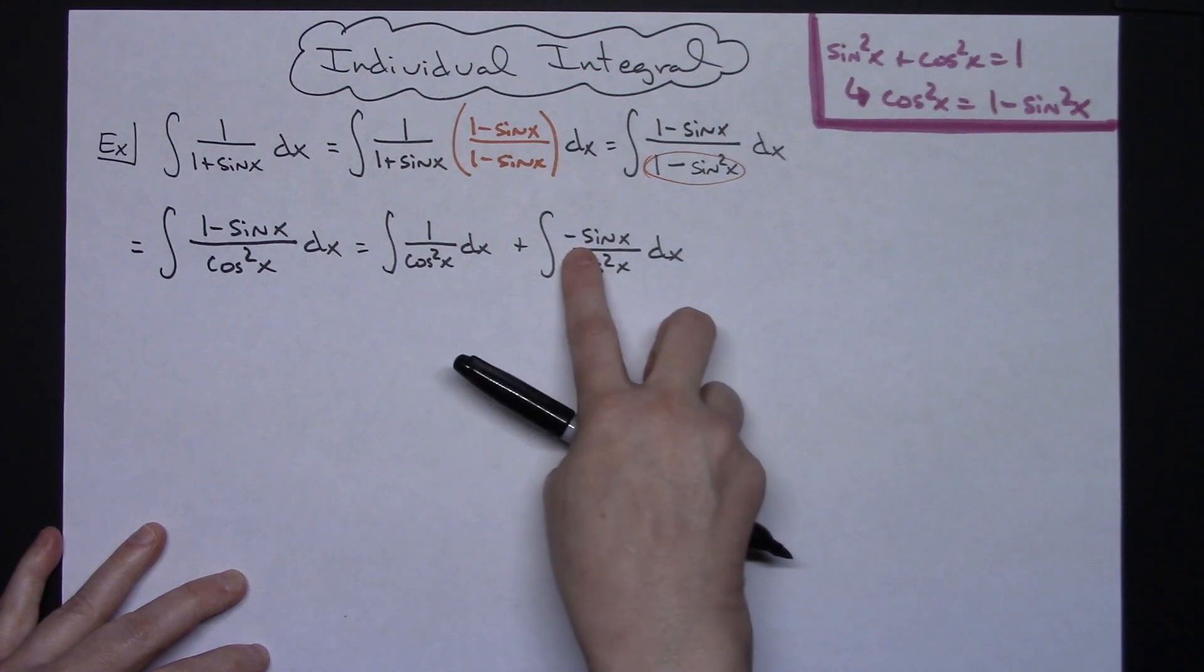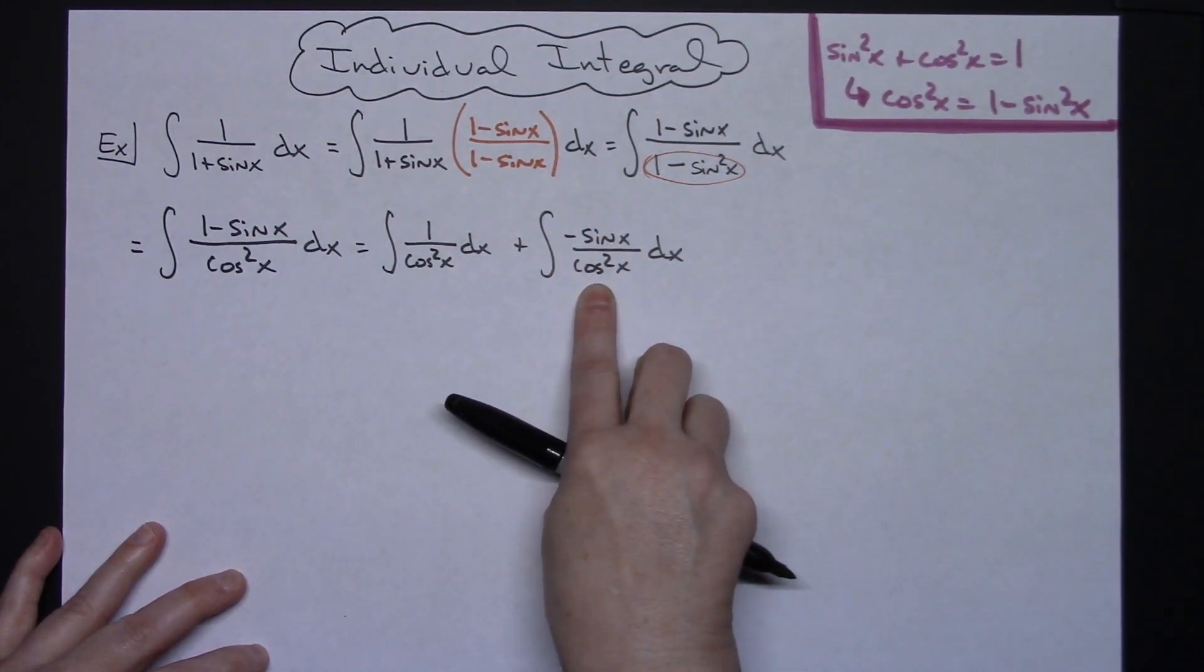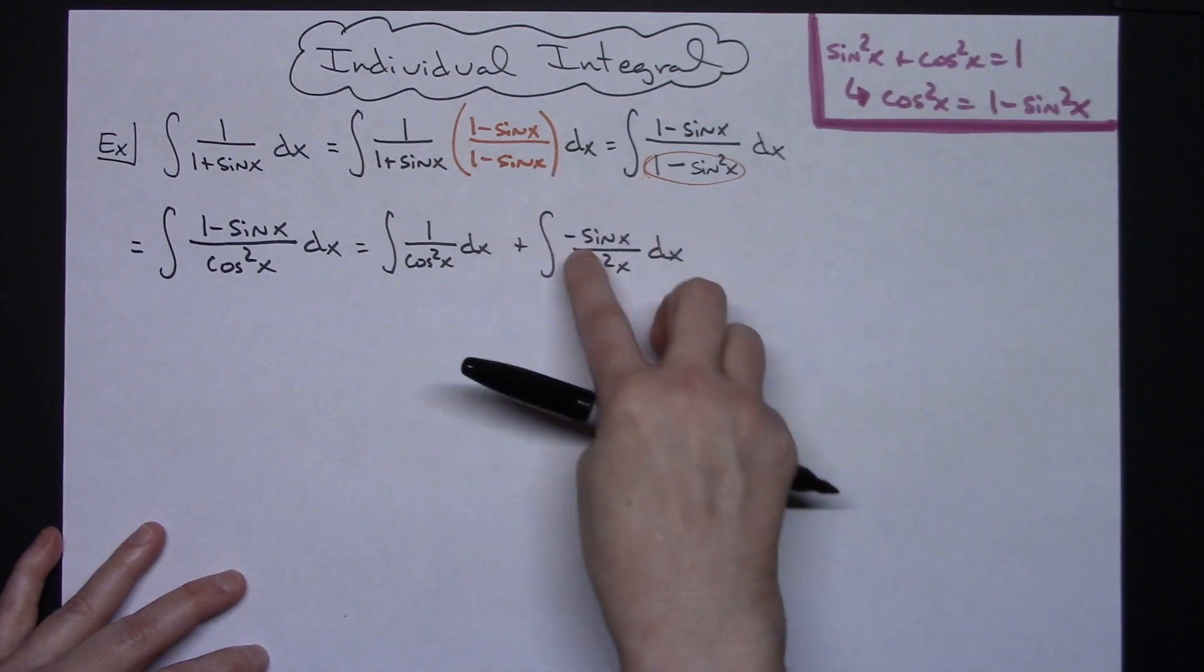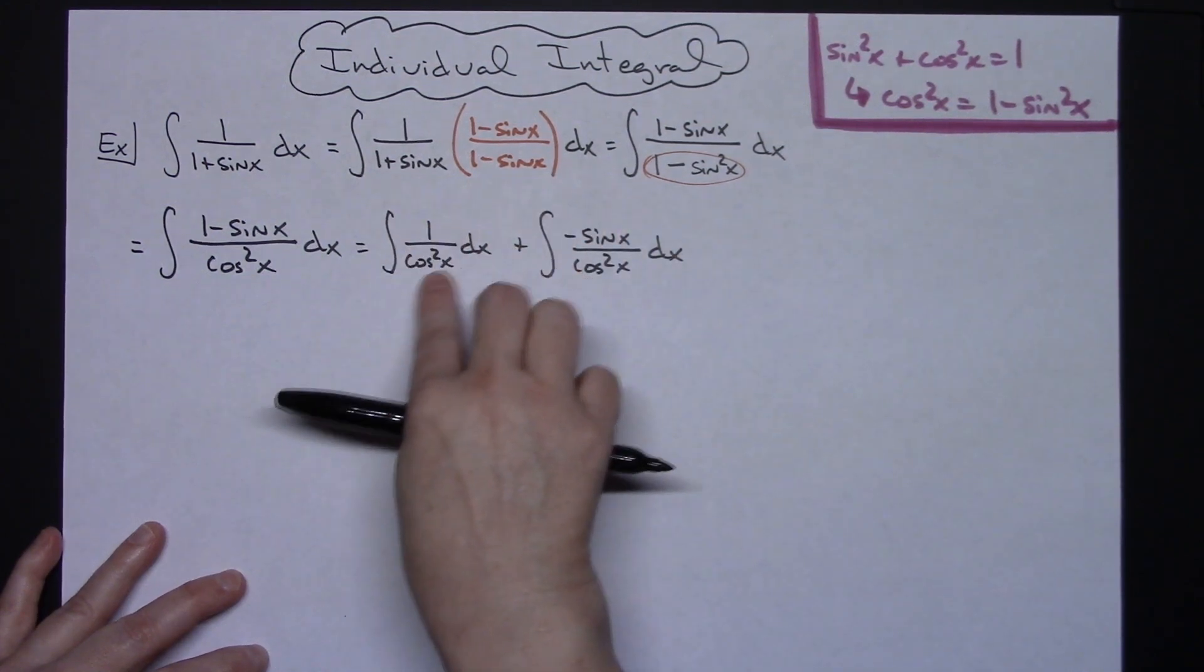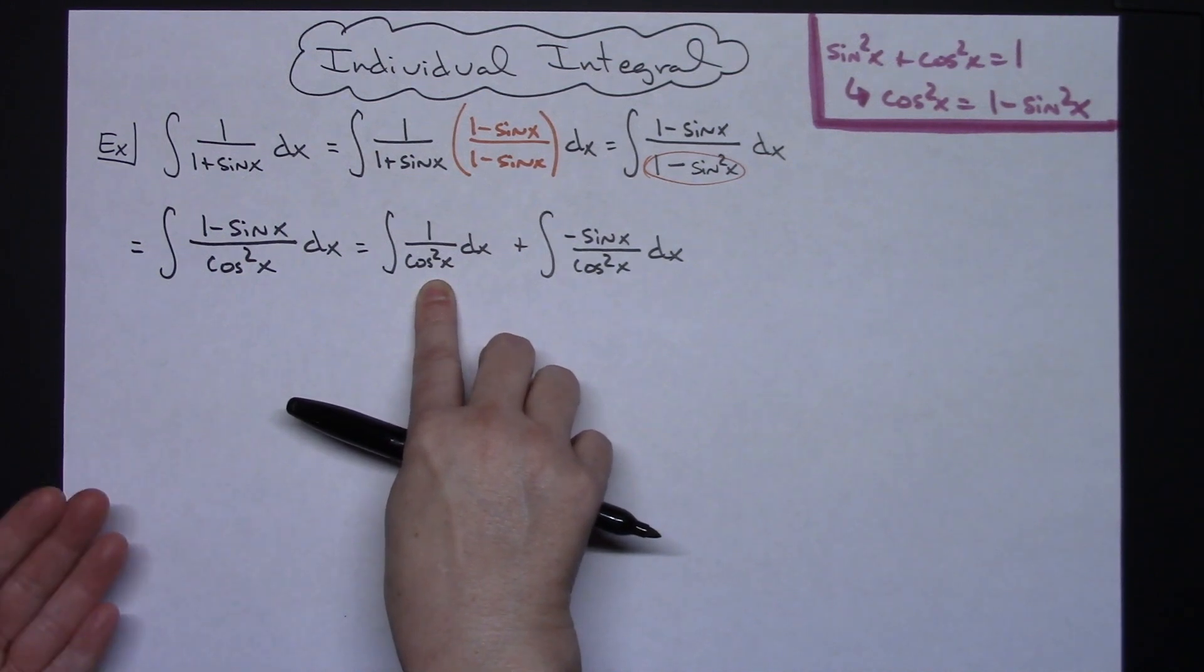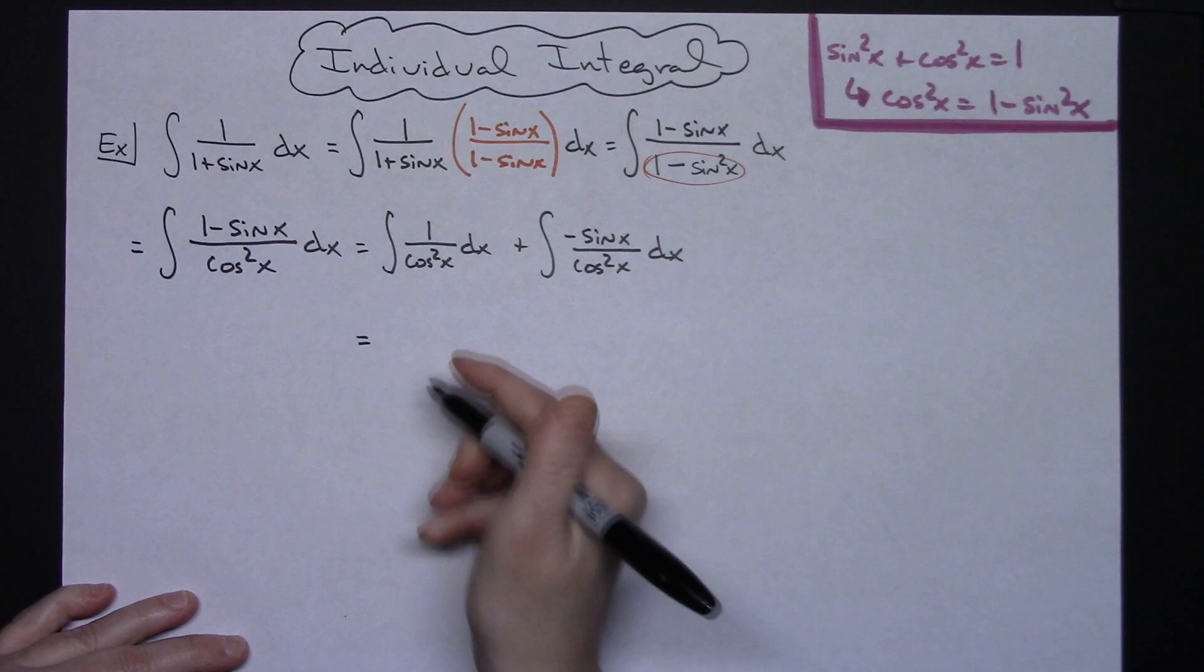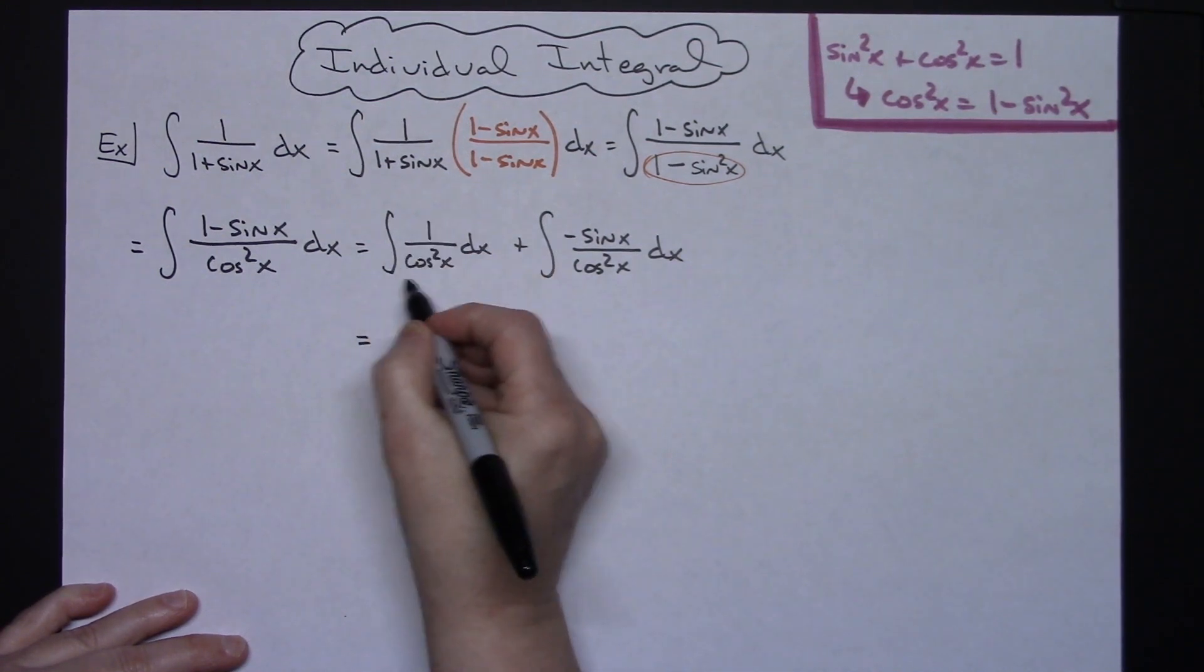All right now at this point the reason I want to do this is because this is going to work out with a nice u substitution part okay with that derivative of cosine being a negative sine things are going to cross out really nice. This right here I can switch to a reciprocal identity of secant okay.